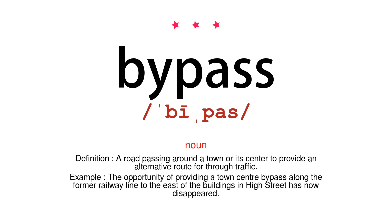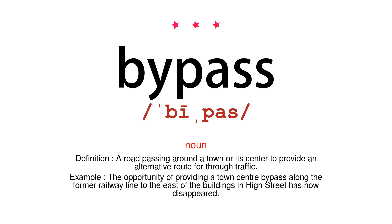Noun. Definition: a road passing around a town or its center to provide an alternative route for through traffic. Example: the opportunity of providing a town center bypass along the former railway line to the east of the buildings in High Street has now disappeared.